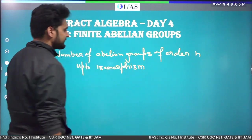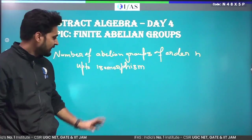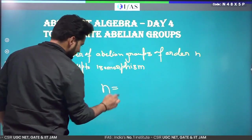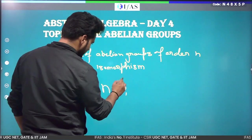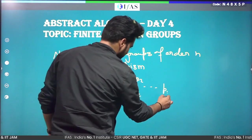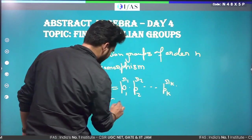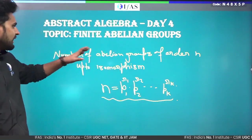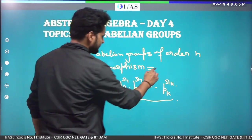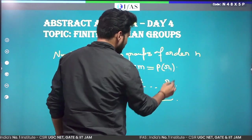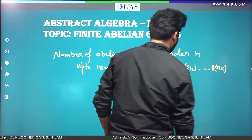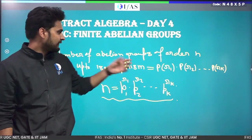Up to isomorphism means: how many non-isomorphic abelian groups of order n will there be? For any given n, which will be a positive integer, we can do its prime factorization. If the prime factorization gives us p1^r1 · p2^r2 · ... · pk^rk, then for the number of abelian groups of order n up to isomorphism, you need to find the number of partitions of each power r1, r2, ..., rk.